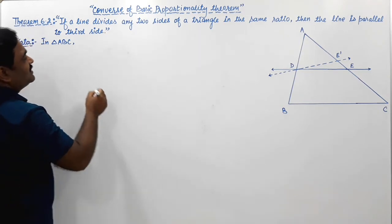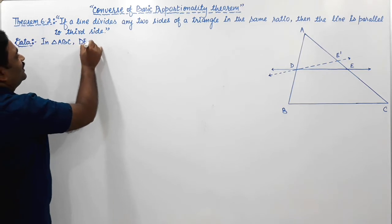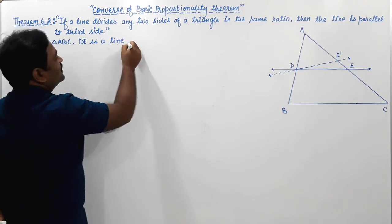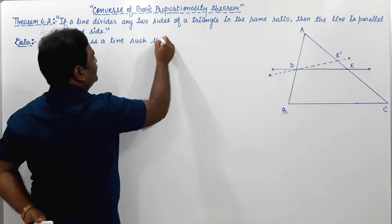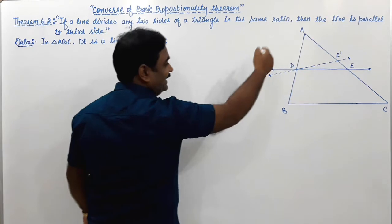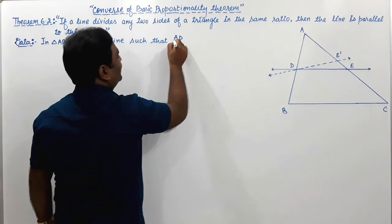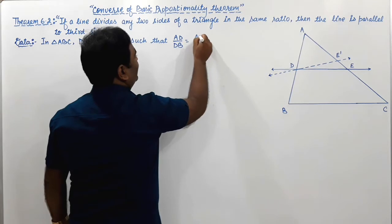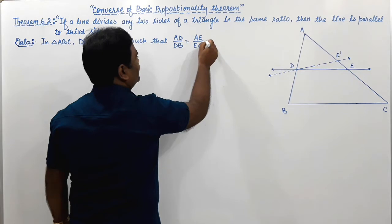D is a point such that DE is a line such that DE divides AB and AC in the same ratio, meaning AD upon DB equals AE upon EC. This thing is given.